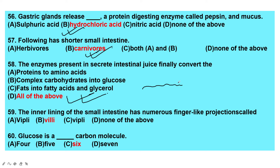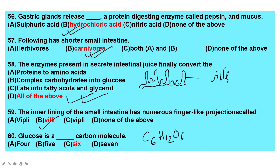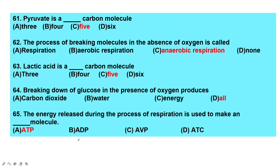The finger-like projections in the small intestine increase the absorption rate and are called villi. Glucose is a 6-carbon molecule — C6. Ribose is a 5-carbon molecule.